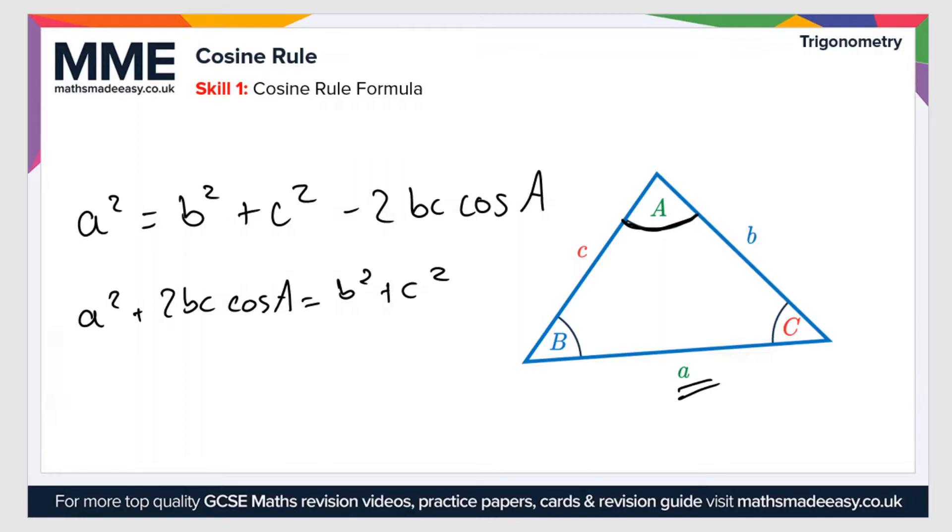And then if we minus this a squared from the left hand side, then we get 2bc cos a equals b squared plus c squared minus a squared.